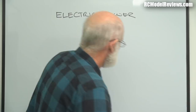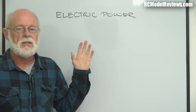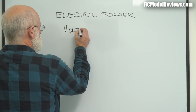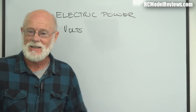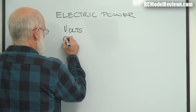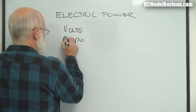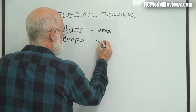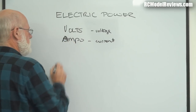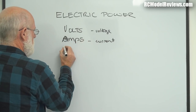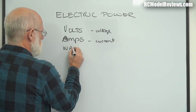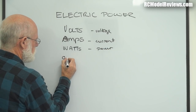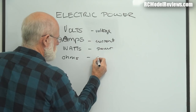I'm going to start from the very basics and talk about electrical power. There are several things you need to know about electricity: volts, which is a measure of voltage; amps, which is a measure of current; watts, which is power; and ohms, which is resistance.